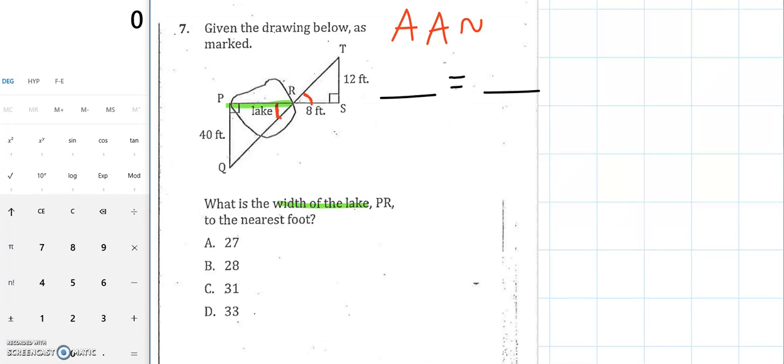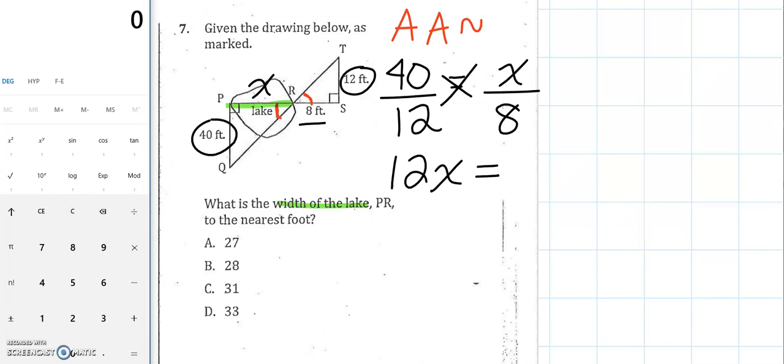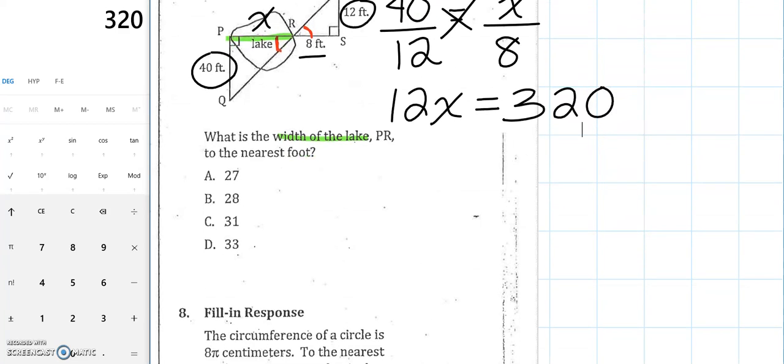So let's set up our proportion. Now we're going to match things up, and everyone's going to match things up differently, it's just you have to stay consistent. So the way that I'm going to do it, I'm going to match up 40 from my bigger triangle with the 12 from my smaller triangle. And then I'm going to match up the length of PR, which I'll call X, with the length of 8. So here I've matched things up. Now I'm going to cross multiply to get my value of X. 12 times X is 12X. In the calculator I'm going to do 40 times 8, I get 320. And lastly we are going to divide by 12, and we get 26.6 repeating.